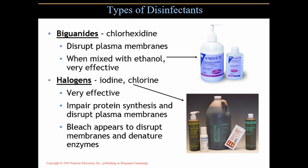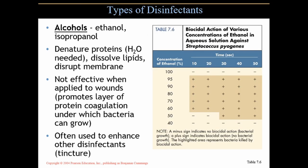Halogens — iodine and chlorine. Iodine, like the iodine in betadine, is very effective. It impairs protein synthesis and disrupts plasma membranes, causing problems at the ribosome as well as in the plasma membrane. Bleach, referring to chlorine, appears to disrupt membranes and denature enzymes. So the plasma membrane is that number-one target, and nailing the enzymes as well — if enzymes are shut down, they can't carry out their functions.